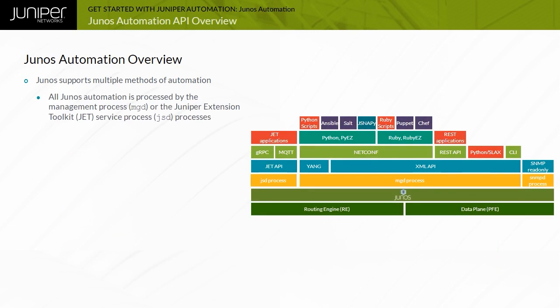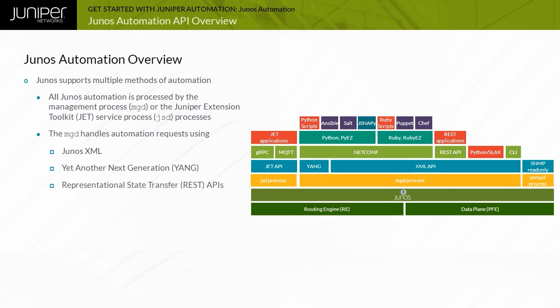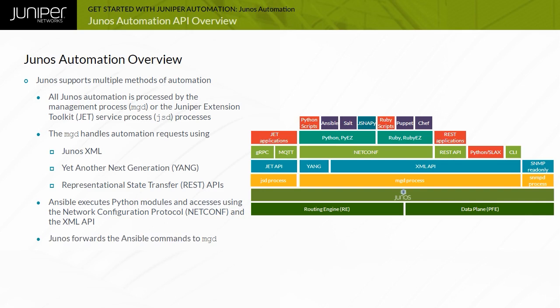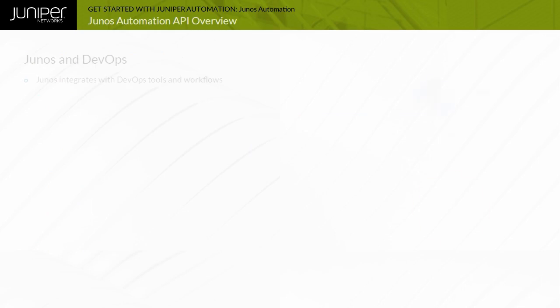The main Junos processes responsible for automation are the management process or MGD and the Juniper Extension Toolkit or JET service process or JSD. The MGD handles automation requests received using the Junos XML, YANG, and REST APIs, as well as some functions. For example, Ansible executes locally stored Python modules and accesses the Junos device using the network configuration protocol or NETCONF and the XML API. Junos forwards the received Ansible commands to the Junos MGD process for execution. The JSD service handles automation requests that use the JET API.